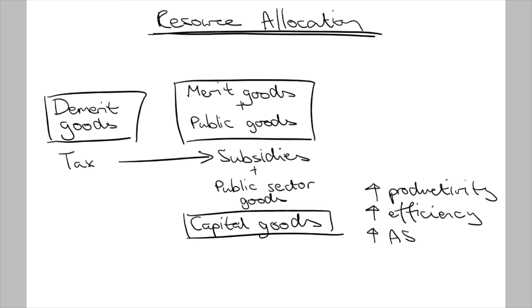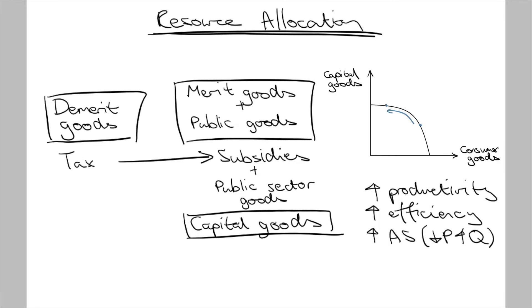This is an increase in aggregate supply, causing output to increase while price levels fall. Another perspective is that because transport infrastructure contributes to increased productivity, it could be considered a capital good. Capital accumulation shifts the production possibility frontier outwards, representing a greater productive capacity of the economy in the long term.